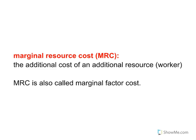Marginal resource cost — we can abbreviate that MRC — and it's the additional cost of an additional resource, or in this case, a worker. We've encountered the word marginal repeatedly throughout the course, and remember, marginal means additional or one more. So if I hire one more worker, how much more does it cost me to do so? That's marginal resource cost. It's also referred to as marginal factor cost, or MFC. I've seen both ways to say it on the AP exam, so just be familiar with either.